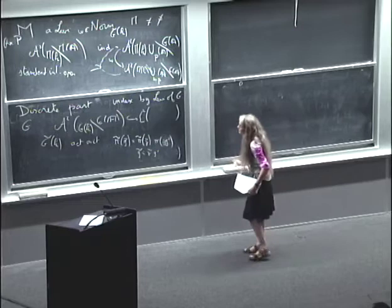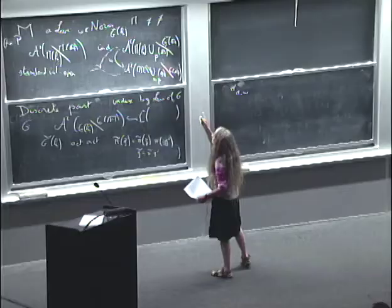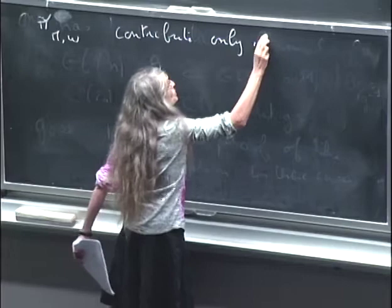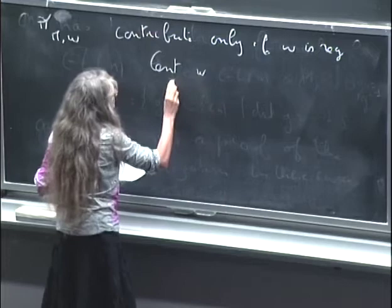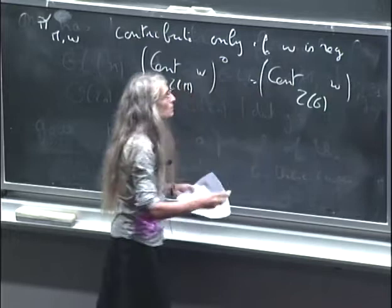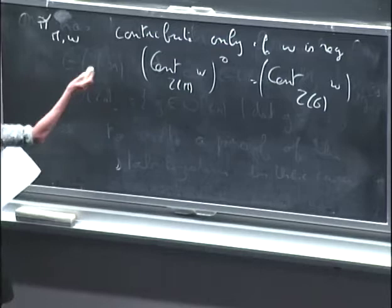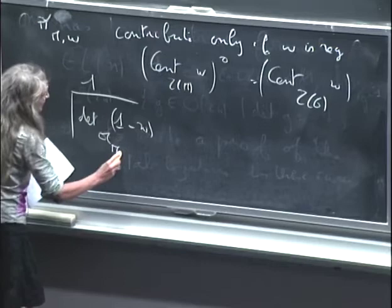This gives a representation which depends on M and W. Now this contributes to the discrete part of the trace formula only if W is regular — meaning the centralizer of W in the center of M is not too big. And the contribution is scaled by a factor: the determinant of W acting on A_M. I will explain later, if I have time, exactly what this is.